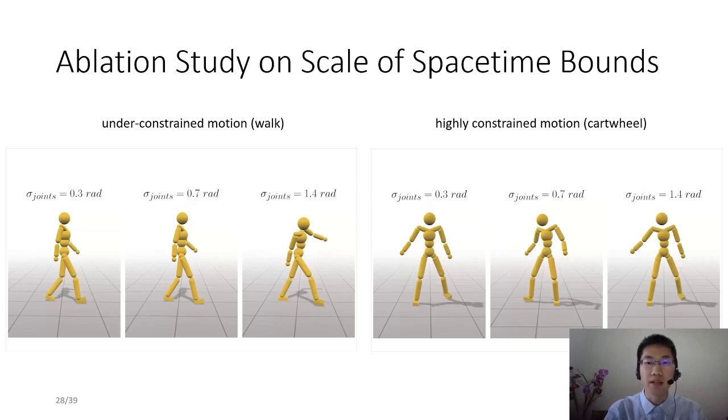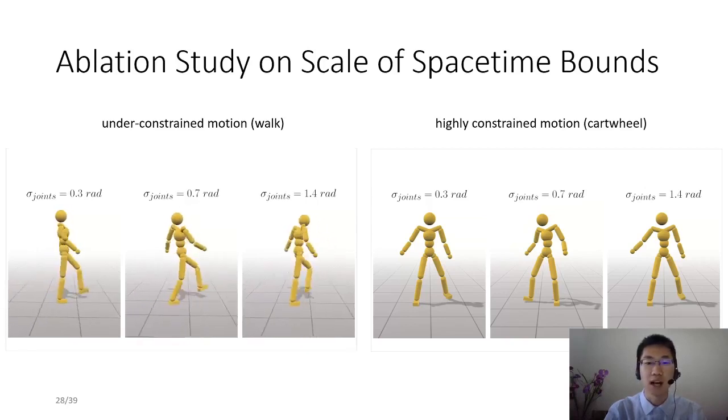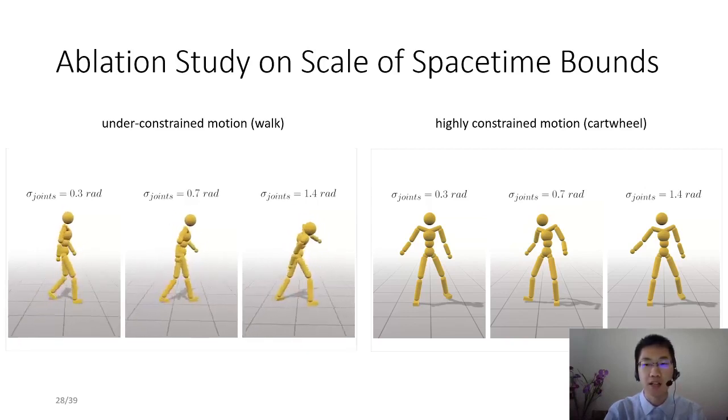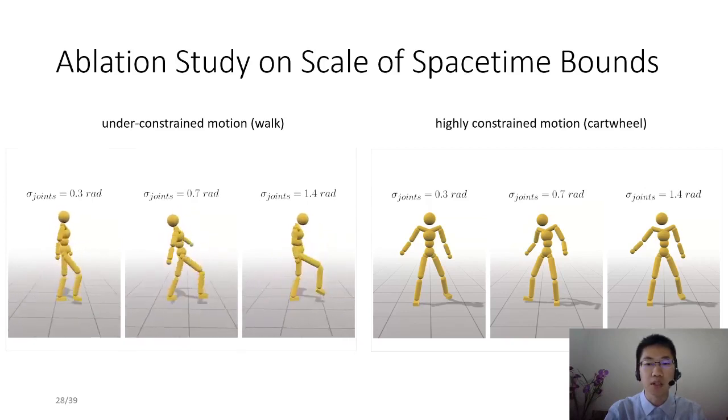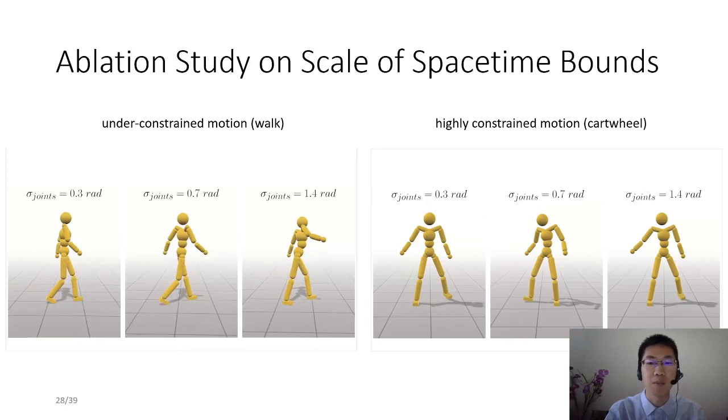We analyze the sensitivity of spacetime bounds by training a series of controllers using spacetime bounds of different sizes, varying from tight to loose. For under-constrained motions with large initial feasible regions, such as walking, the learned policy changes notably with respect to the size of specified spacetime bounds. The looser the spacetime bounds are, the more relaxed and less constrained the learned walk is.